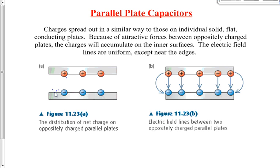The protons don't go to the outer surface of the other plate — protons don't move. On the top plate, which is positively charged, you have an excess of protons or a deficiency of electrons. On the bottom plate, you have an excess of electrons that move to the side closest to the positive plate. On the top plate, the electrons move such that the facing side becomes positive. The net positive charge ends up evenly distributed on the top plate.